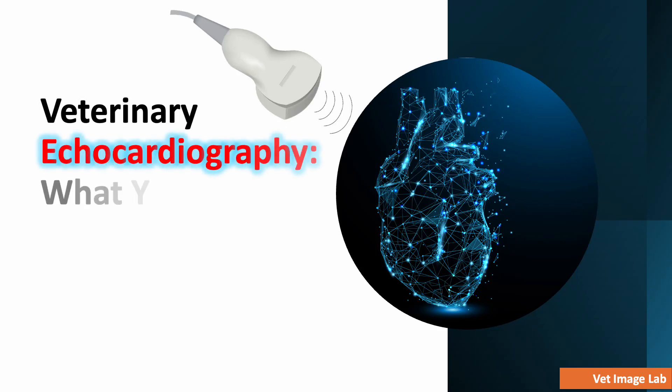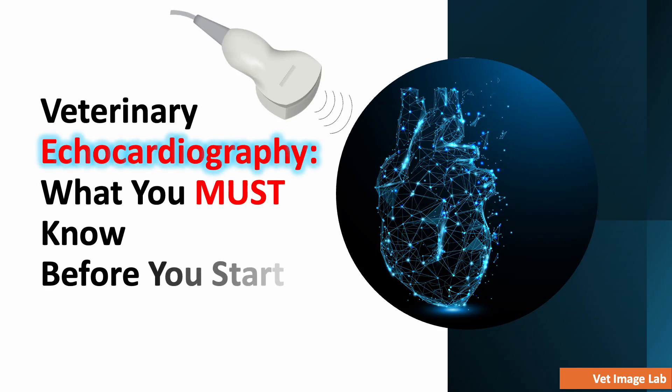Hi, and welcome back to Vet Imaging Lab. In today's lecture, we'll cover the three essential ultrasound modes used in veterinary echocardiography: B-mode, M-mode, and Doppler mode. You'll also master the difference between color and spectral Doppler, and see how each is used in clinical practice to assess blood flow direction, velocity, and patterns. Let's dive in.